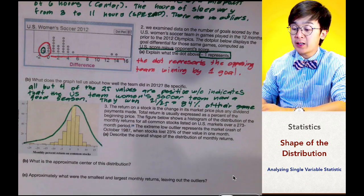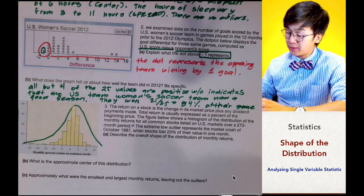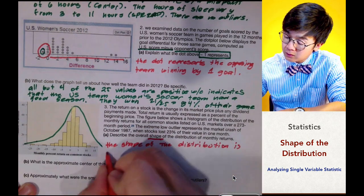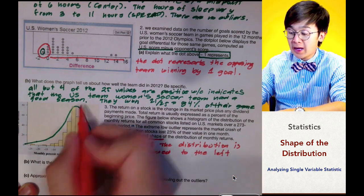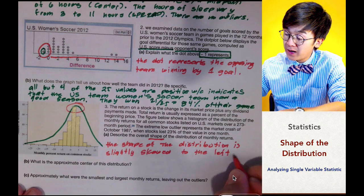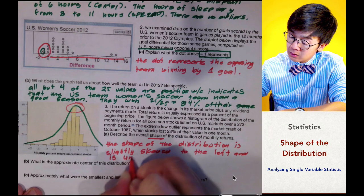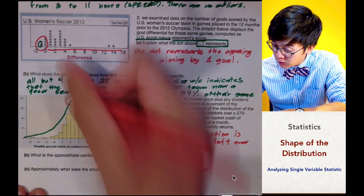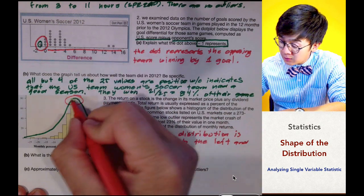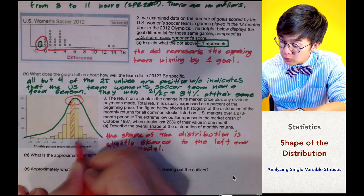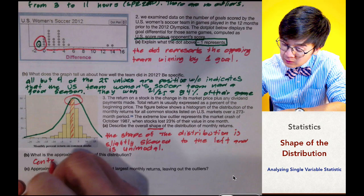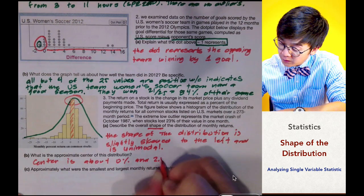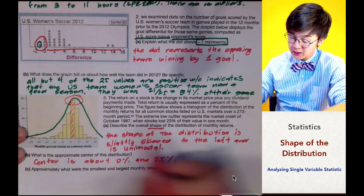This is a skewed distribution — specifically, it is skewed to the left, because the tail of the distribution is on the left side of the shape. Since there is only one peak in this distribution, we can also say that it is unimodal. To approximate the center of the distribution, the peak of the histogram falls between zero and 2.5, so the center is approximately zero to 2.5 percent.